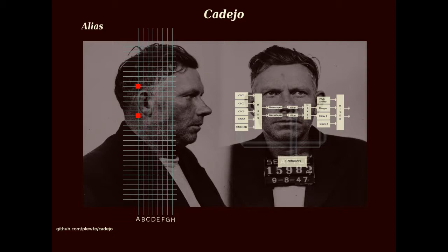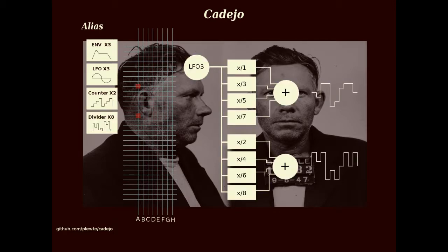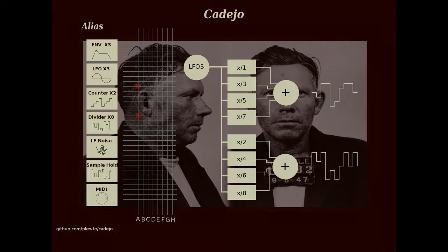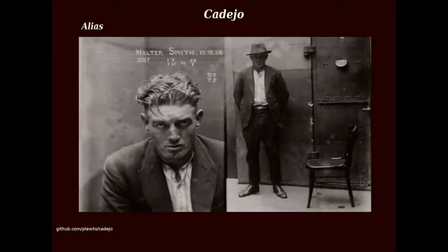The matrix sources include three five-stage envelopes, three LFOs, two step counters, two frequency divider lines, a low frequency noise source, sample and hold, and external MIDI signals. Alias may be used much as one would any other synthesizer — it is a complex instrument capable of producing intricate, evolving sounds.